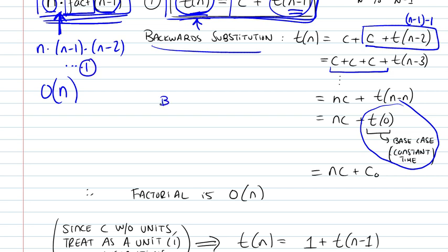So once you reach the base case of this recursive algorithm, you would have whatever it is just return 1. And so it involves a constant number of steps. We're going to call it c0.